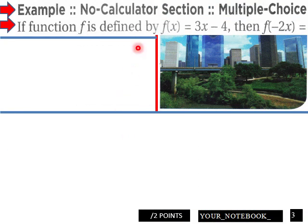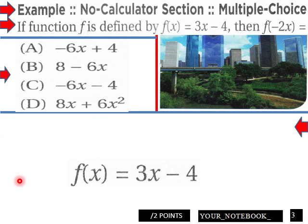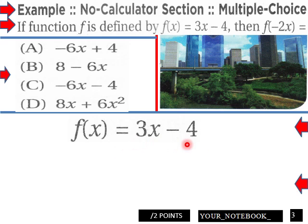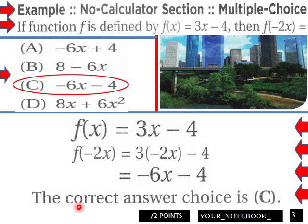Now calc section, multiple choice. If function f is defined by f(x) = 3x - 4, then f(-2x) would be what? Here are our possibilities. f(x) equals 3x minus 4, so f(-2x) would be 3(-2x) minus 4, which is -6x minus 4. The correct answer would be C for this.